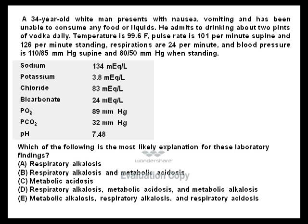Serum electrolytes reveal a sodium of 134, potassium of 3.8, chloride of 83, bicarbonate of 24, pO2 of 89, pCO2 of 32, and a pH of 7.48. Initially one would suspect a mild respiratory alkalosis. Also noted is an anion gap of 33, which suggests a metabolic acidosis. However, there is more going on than a respiratory alkalosis and metabolic acidosis, which will be further explored.